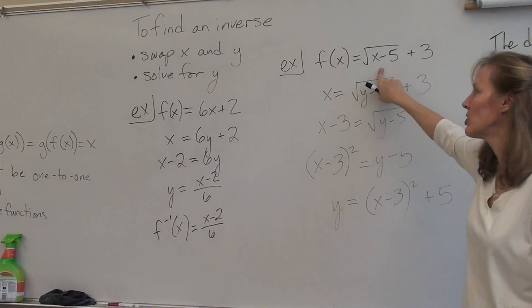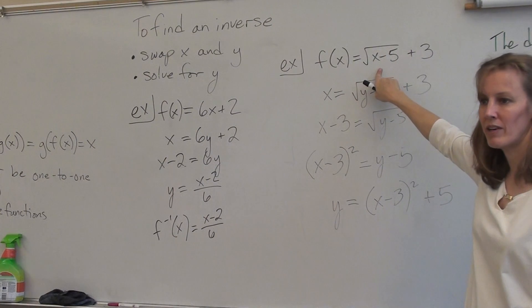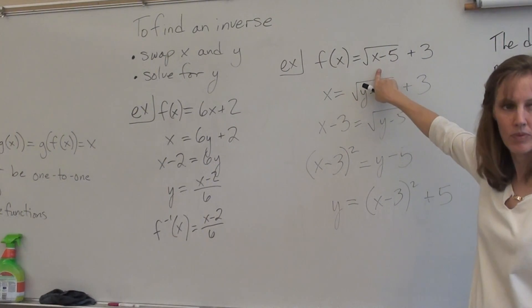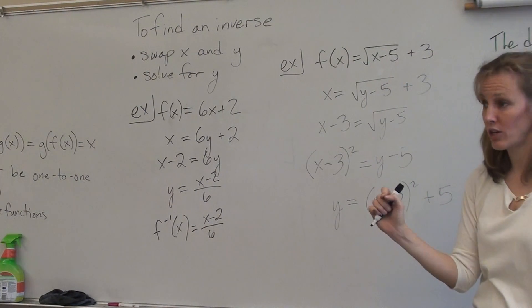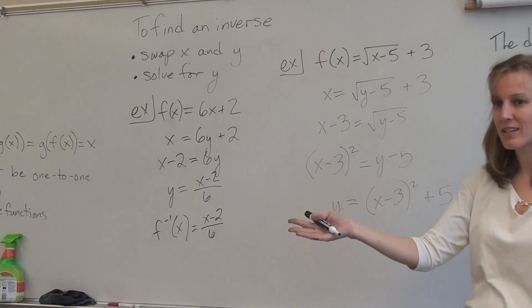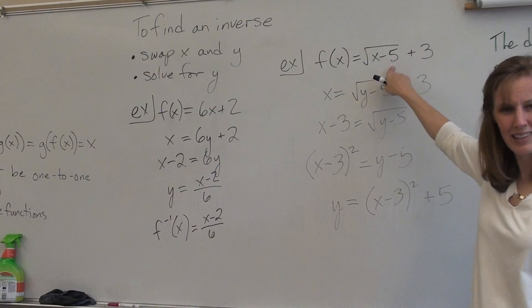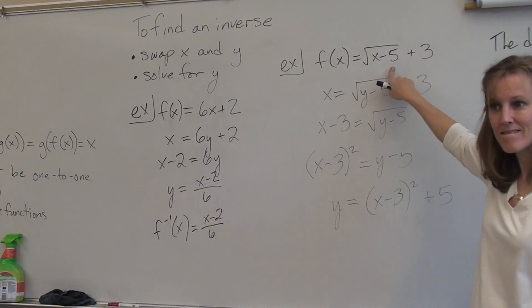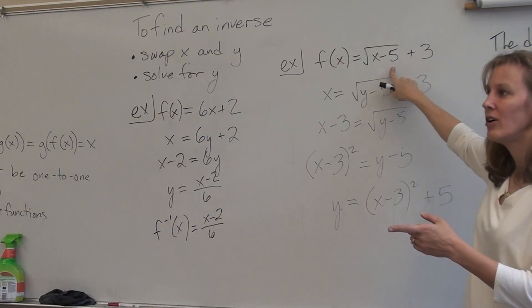But in the context of this being the inverse of this, the domain of this function is not all reals. So this is a new note. I want you to write this down as a note. The domain of the inverse must equal the range of the original function. The domain of the original function would be five to infinity, because you can't have a negative under a radical. Range is a little bit trickier. They're yelling out three to infinity, and they're correct. How did they get that? It says plus three at the end.